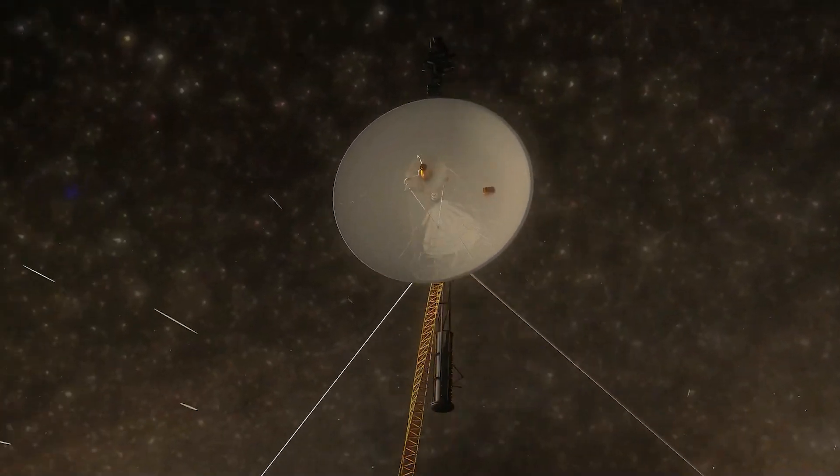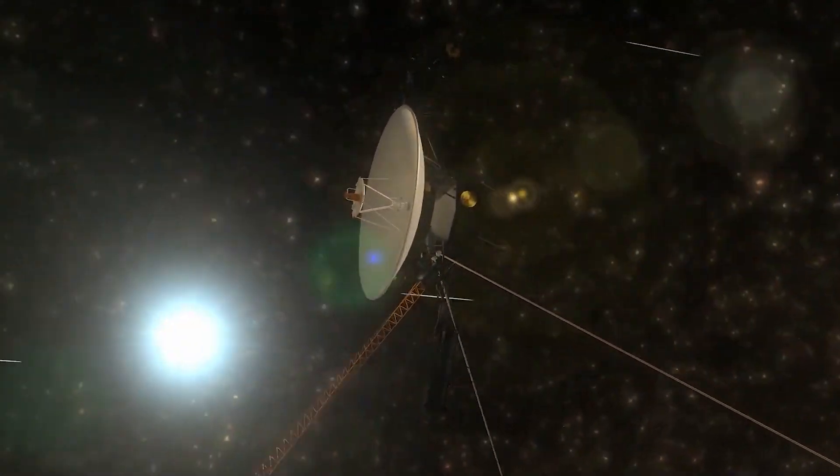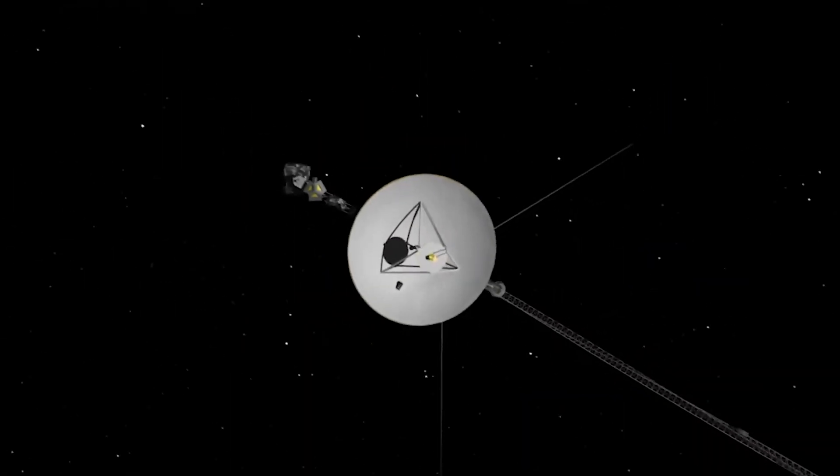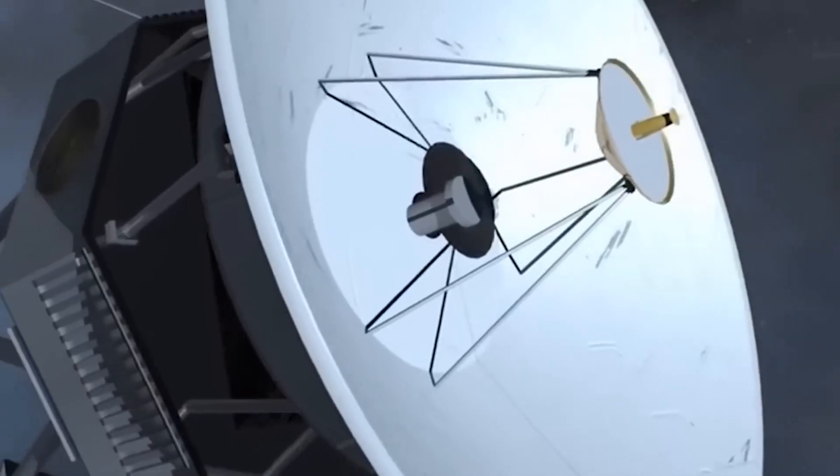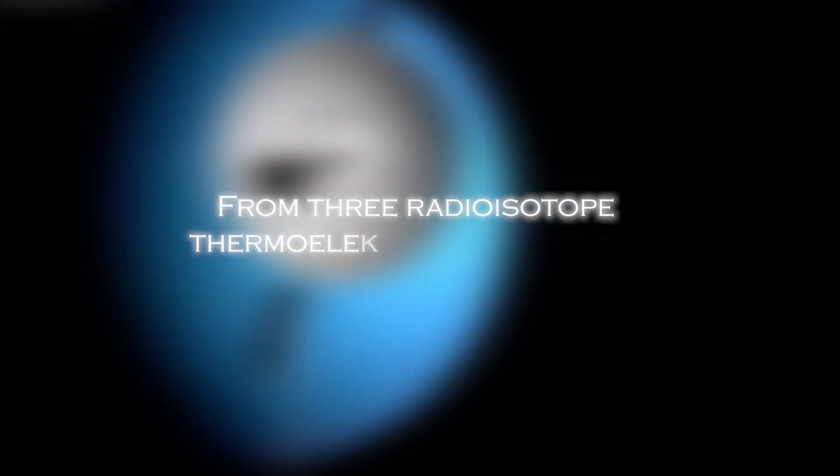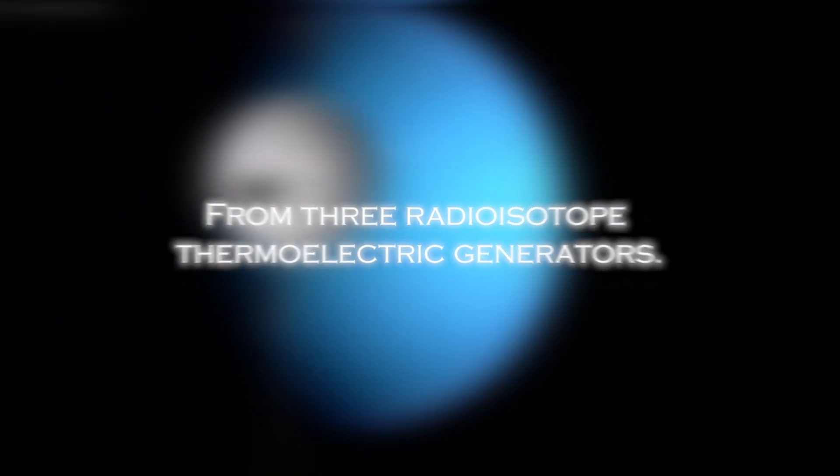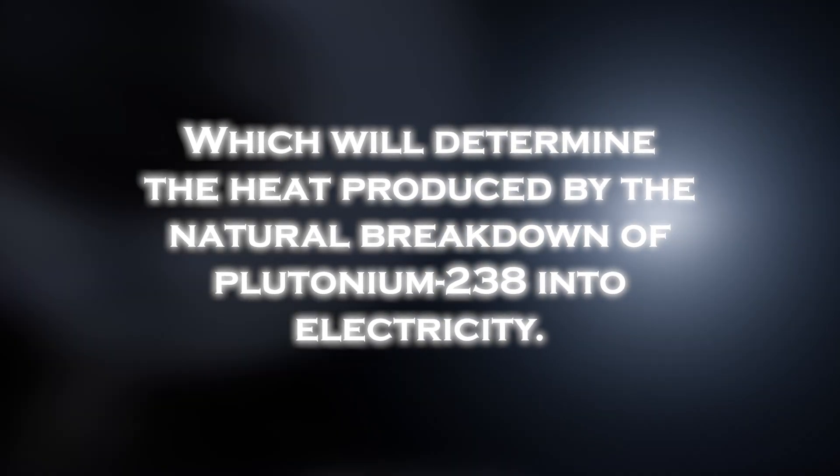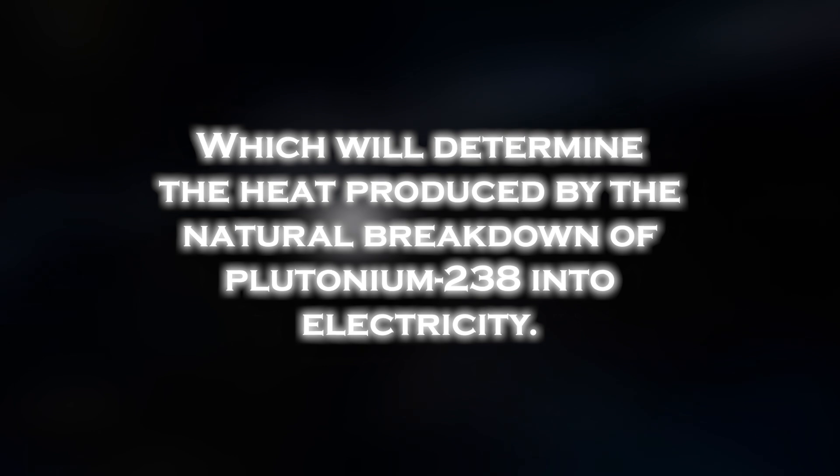However, this milestone was not easy to achieve. As the probe moved farther away from the sun, the amount of sunlight available to power its instruments and systems significantly decreased. The spacecraft's power is generated primarily from three radioisotope thermoelectric generators, which convert the heat produced by the natural breakdown of plutonium-238 into electricity.